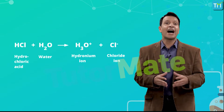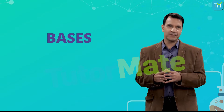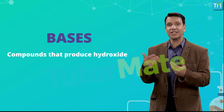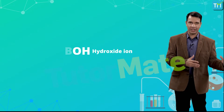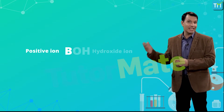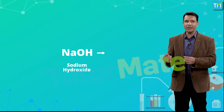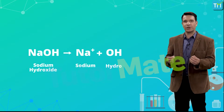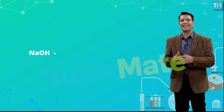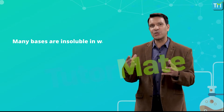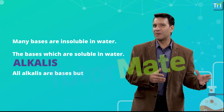Since HCl obeys the Arrhenius rule for acids, it is classified as an Arrhenius acid. Arrhenius defined bases as compounds that produce hydroxide ions when in water. The equation for the generic Arrhenius base BOH can be written as: BOH → B⁺ + OH⁻ ions. For example, sodium hydroxide (NaOH), when dissolved in an aqueous solution, dissociates and releases sodium and hydroxide ions. Due to this, the hydroxide concentration increases, and therefore NaOH is an Arrhenius base. However, many bases are insoluble in water — the bases which are soluble in water are called alkalis. All alkalis are bases, but not all bases are alkalis.